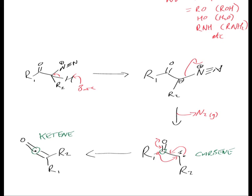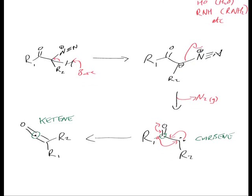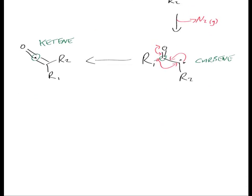Now the ketene is quite susceptible to nucleophilic attack. So we put a nucleophile in there. That then comes in and attacks this carbon here. Get your double-headed arrow again. Goes off. Picks up a proton from your solvent.